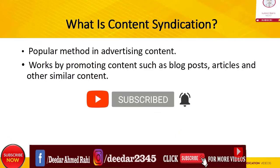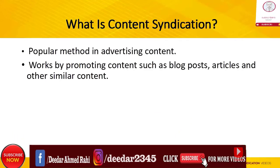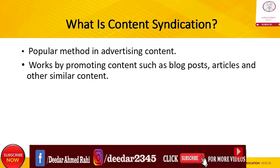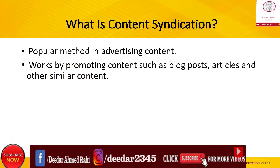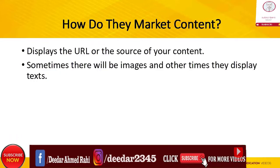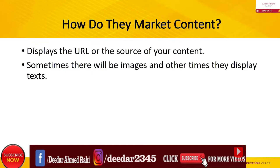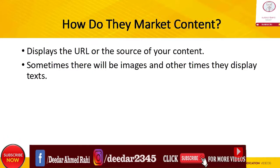Content syndication works by promoting content, such as blog posts, articles, and other similar types of content. There are various ways content syndication networks market specific content. Some may only show the URL or the source of the content, sometimes there will be images, and other times only text.